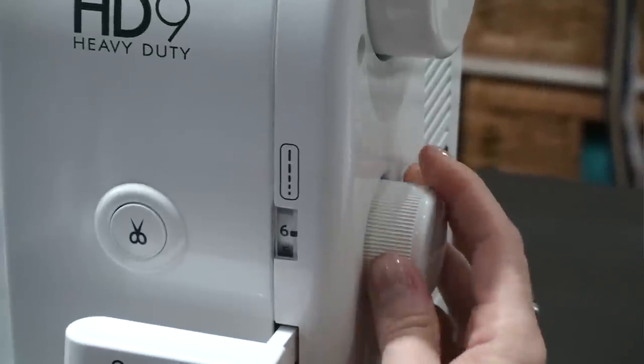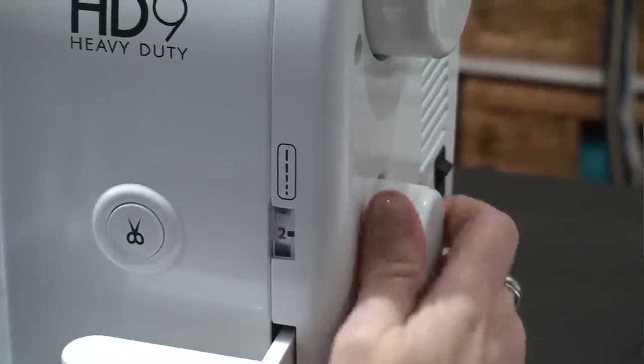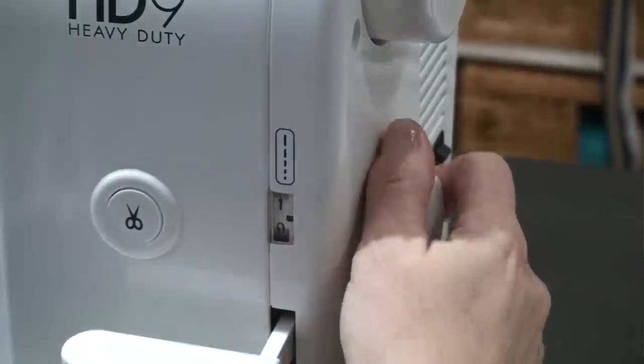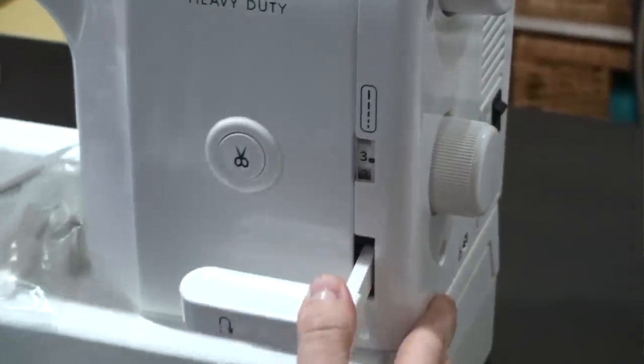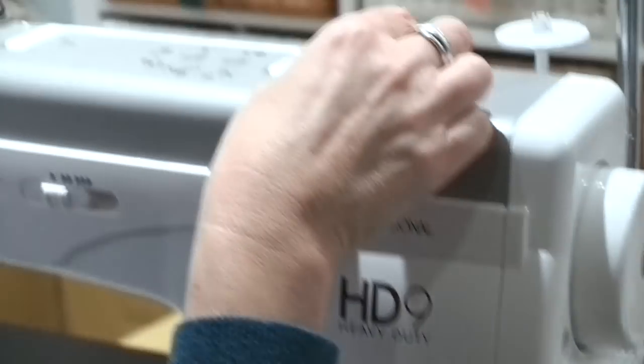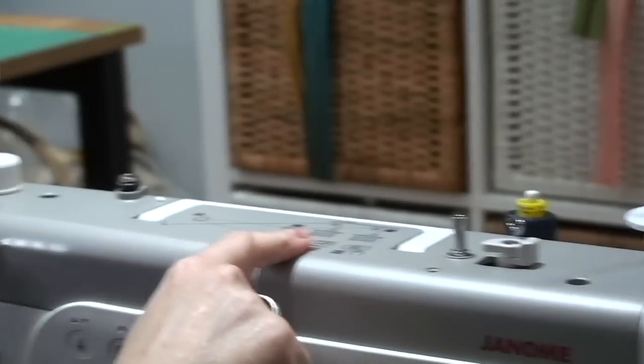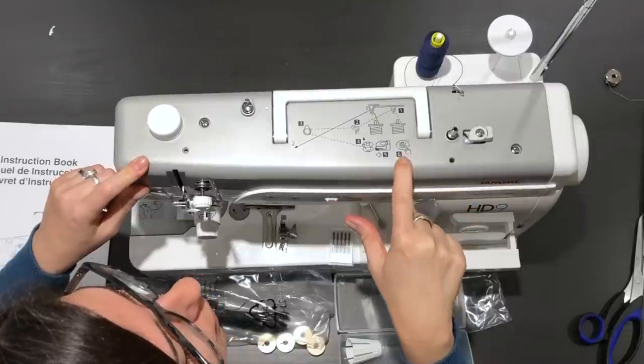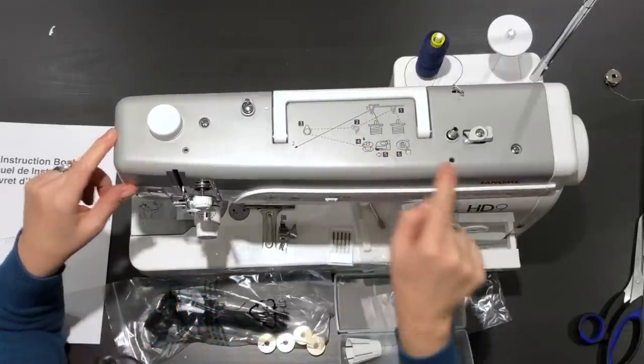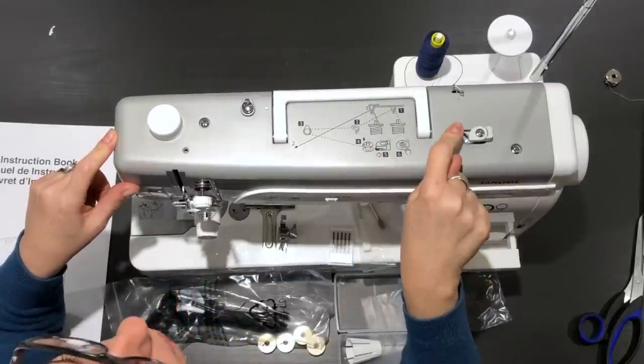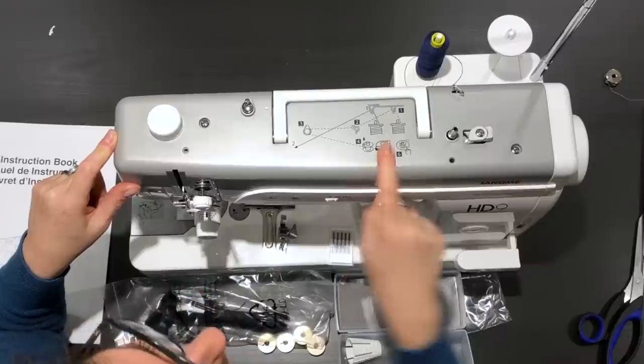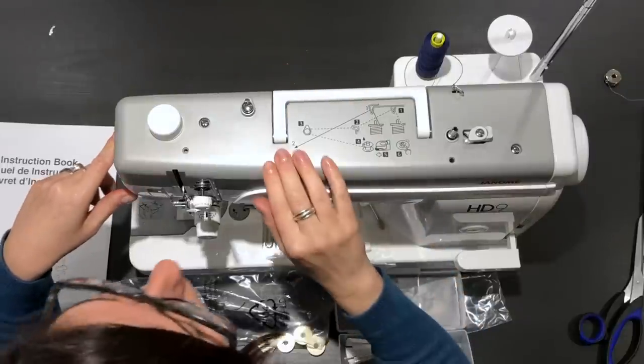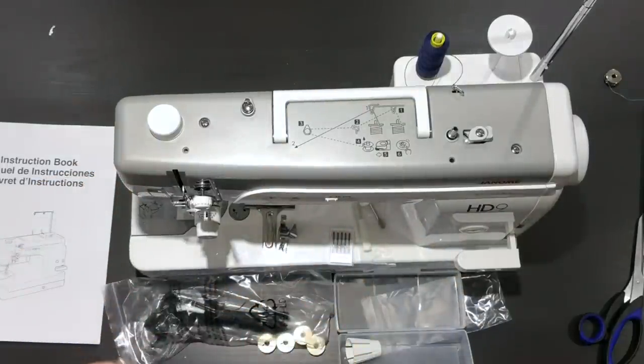And then your stitch length knob is here on the side. And it goes to six, which I think is probably pretty standard. And bobbin winder. Oh, and there's also, I don't know if you can see on the top here, but there's also threading instructions for when you're winding a bobbin, which I really like as well. I hate having to pull the manual out the first few times. Obviously, you'll get it eventually, but it's nice to have that right on the machine.